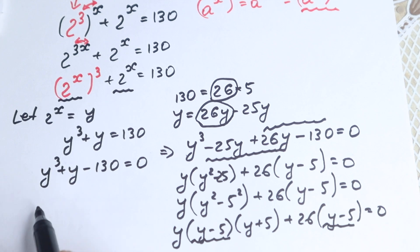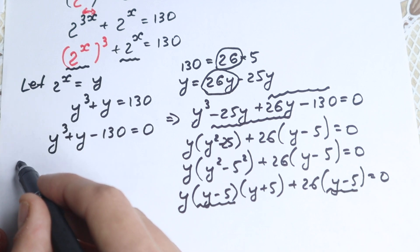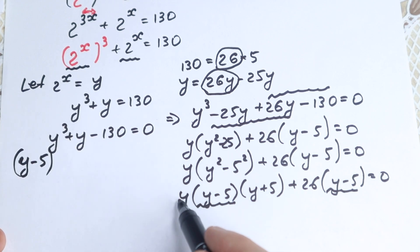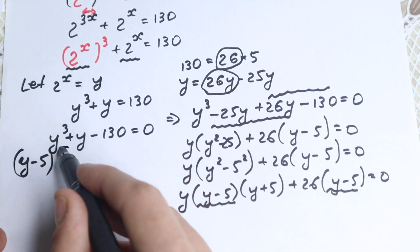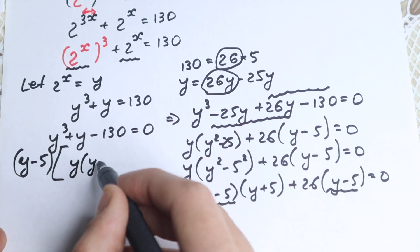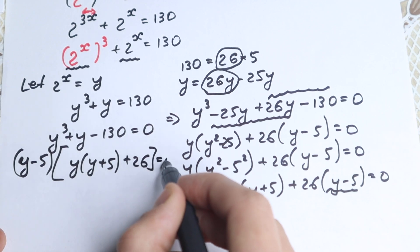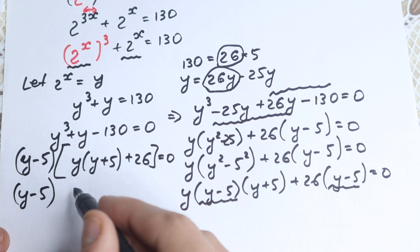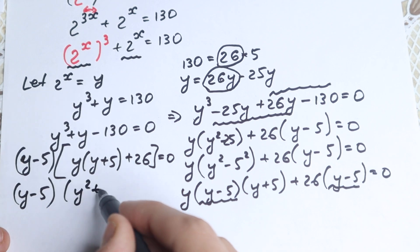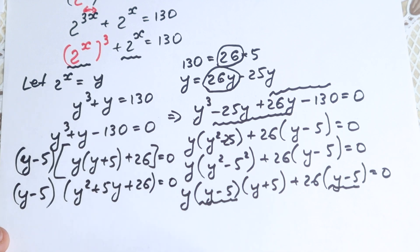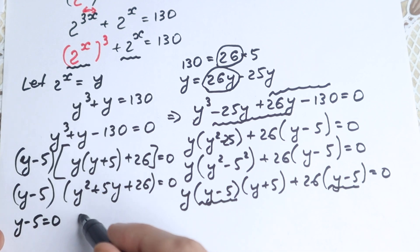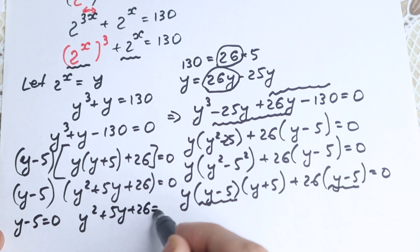So we factor out (y minus 5), and in the second parentheses we collect: y times (y plus 5) plus 26, equals 0. Let's expand that second factor: y squared plus 5y plus 26, equals 0. So our fully factored equation is: (y minus 5)(y squared plus 5y plus 26) equals 0. Then y minus 5 equals 0 is our first solution.